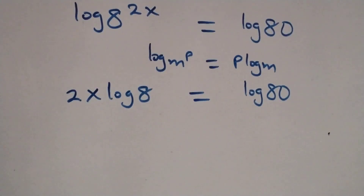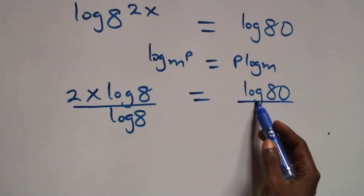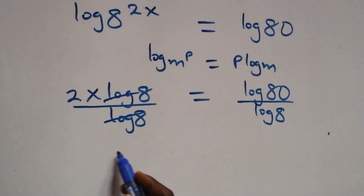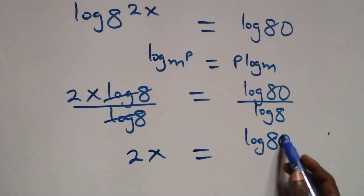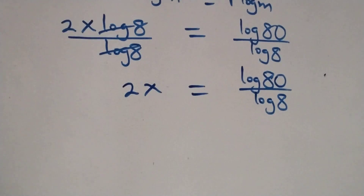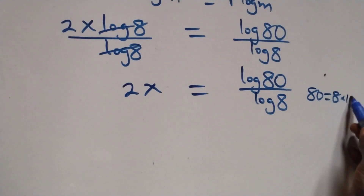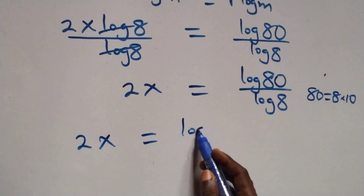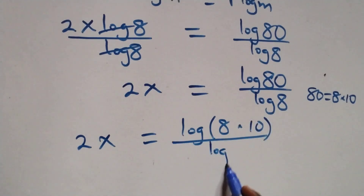The next step is to divide both sides by log 8. We can also rewrite 80 as 8 times 10. Then what we have becomes 2x equals log(8 times 10) over log 8.